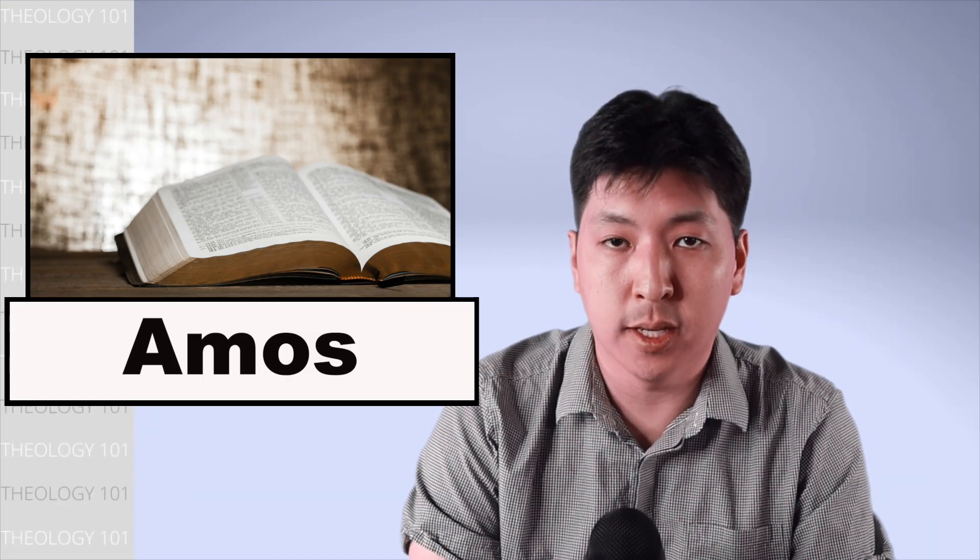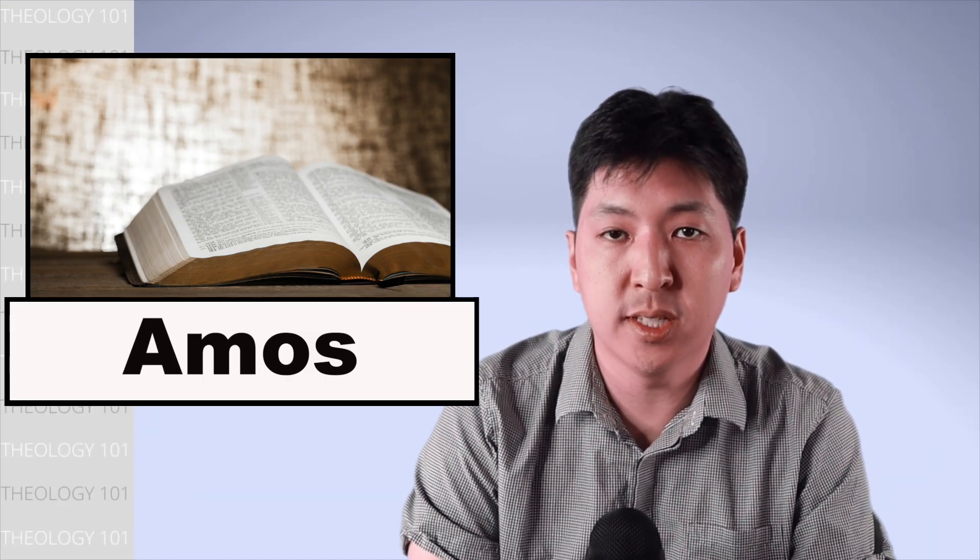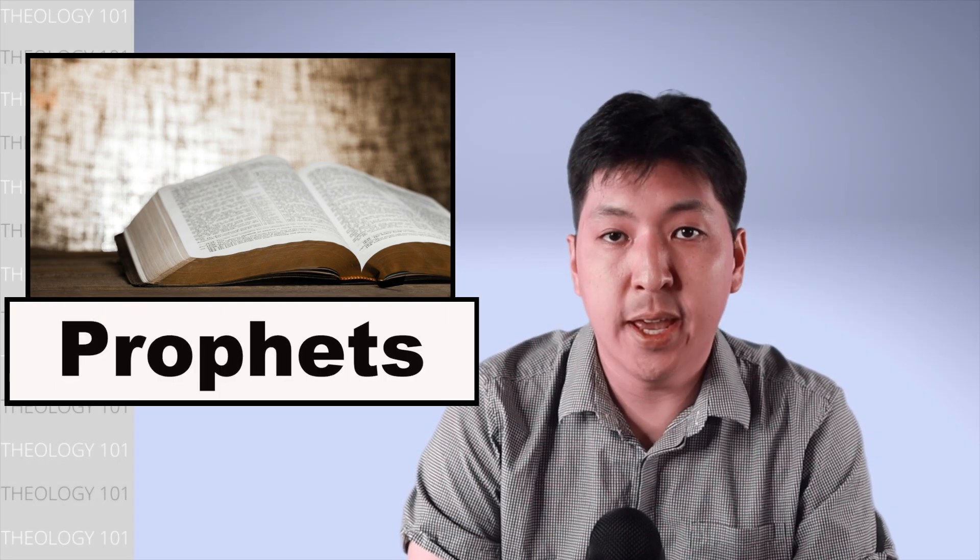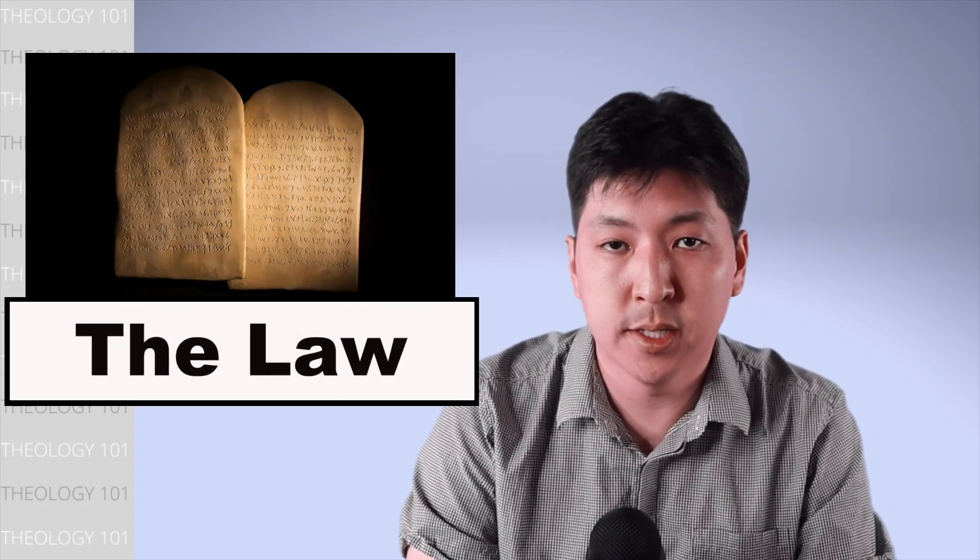The Book of Amos is the 30th book of the Old Testament. The Hebrew Bible has three sections: the Law, Prophets, and Writings. The Law contains the first five books of the Old Testament.